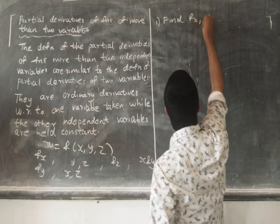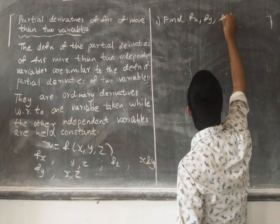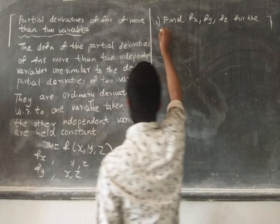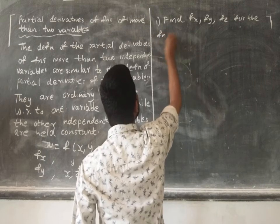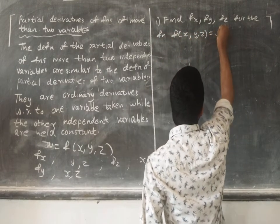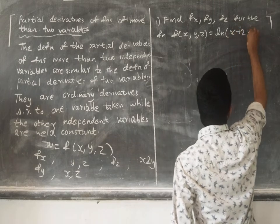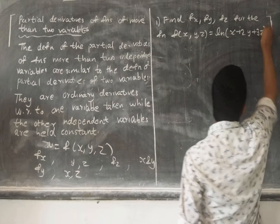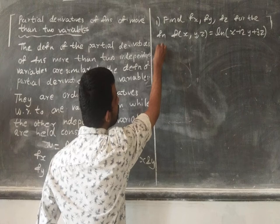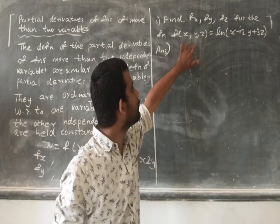Find f_x, f_y, and f_z for the function f(x, y, z) = ln(x + 2y + 3z). So we have three partial derivatives to compute.